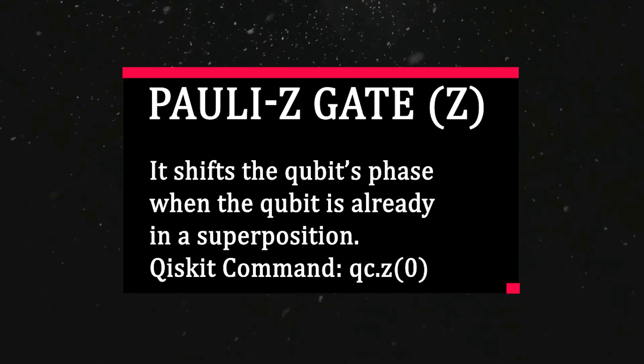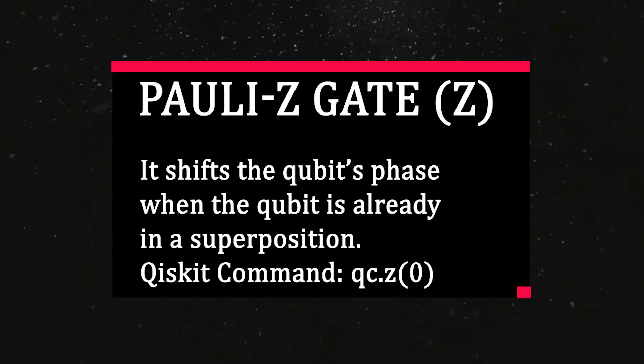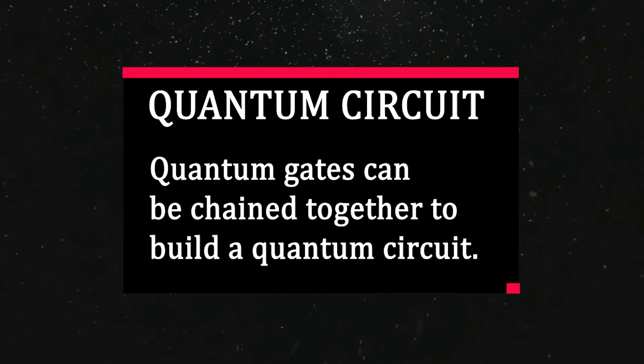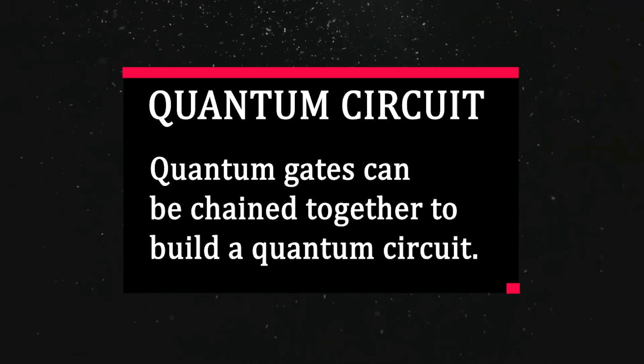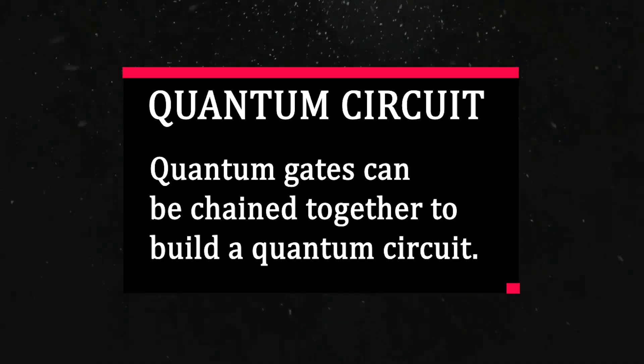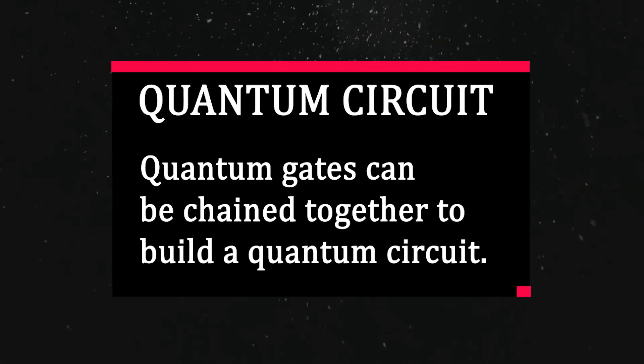Quantum gates can be chained together to build a quantum circuit. By carefully planning which gates to use and in what order, we can carry out meaningful computations before finally measuring our qubits.